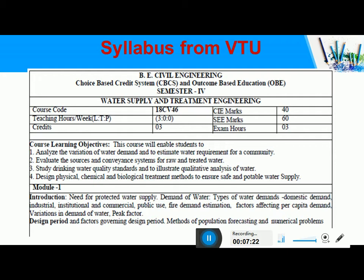Population forecasting is an important aspect in the design of any water supply scheme, because the scheme has to be designed for a given population. We will certainly not design the water supply scheme for the present population — we have to predict the future population. The design period is usually taken as 3 to 4 decades for water supply schemes. We take the present population and employ certain population forecasting methods to predict future population, and for that population we design the water supply scheme.